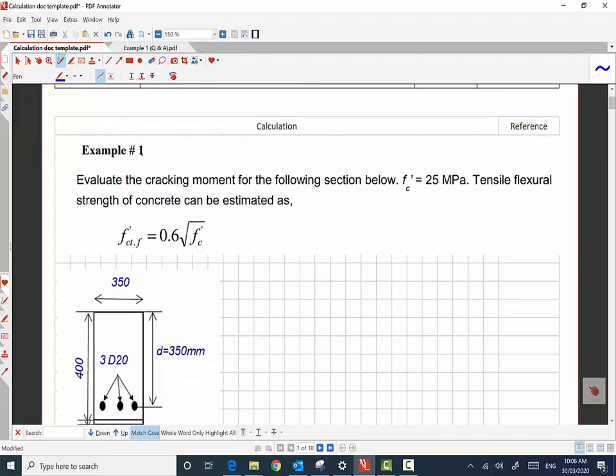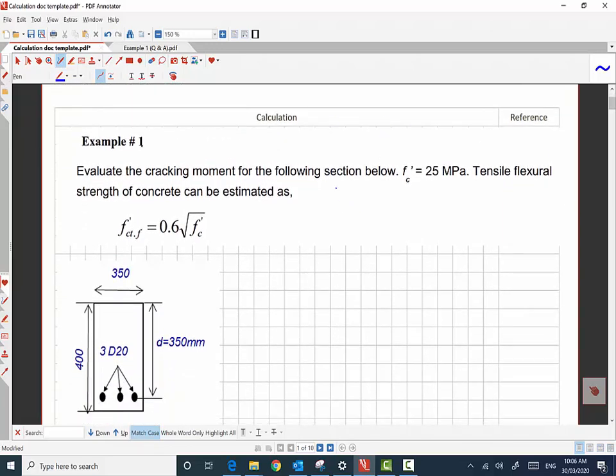As you can see here, the tensile strength of the concrete is given by this empirical formula. This is coming from AS3600 and we are given the compressive strength of the concrete is 25 megapascal.